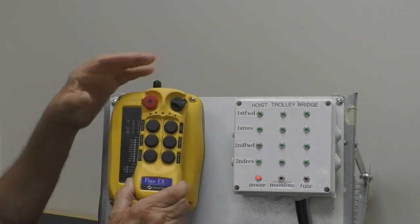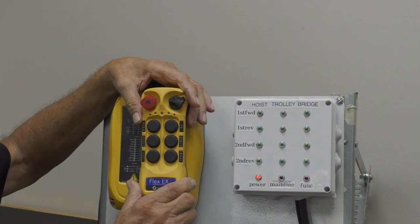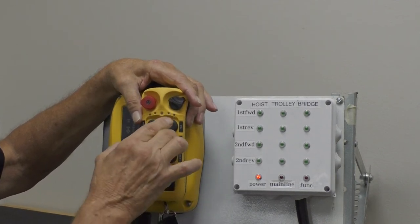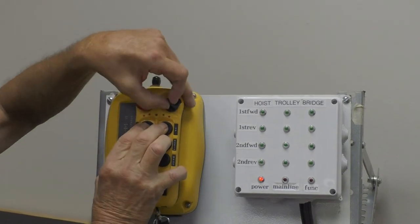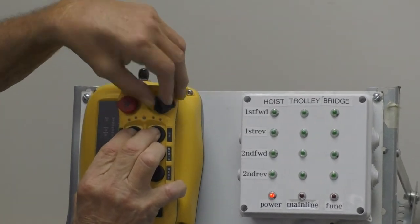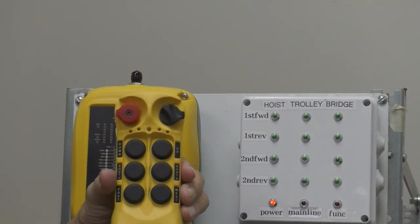You're going to push down buttons one, two, three at the same time. Then you take your black switch and go to the on position. Now I'm in the program mode.